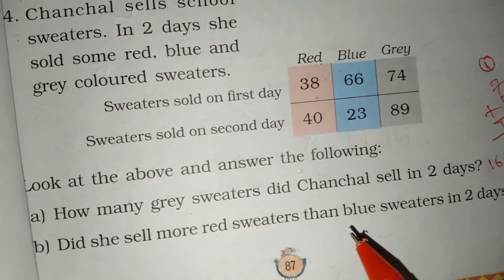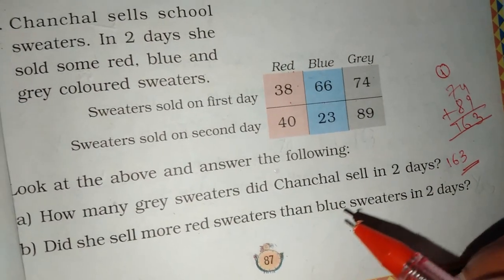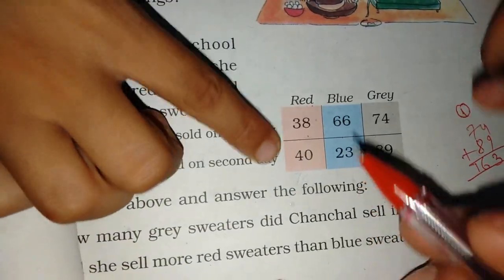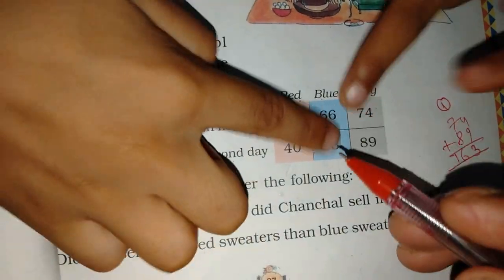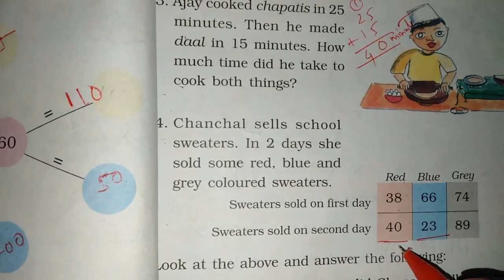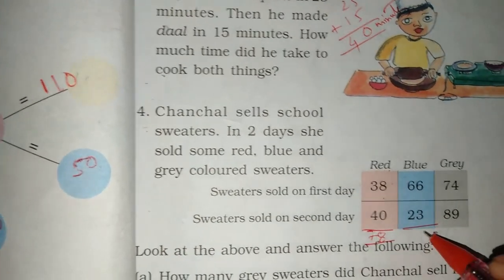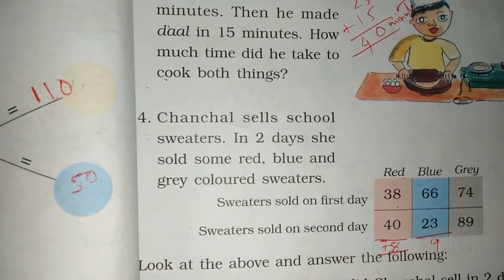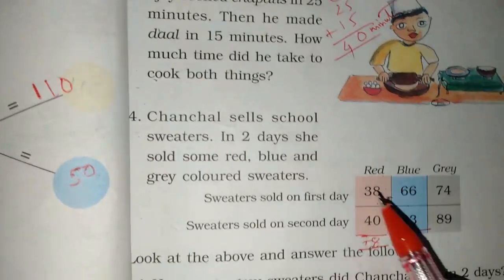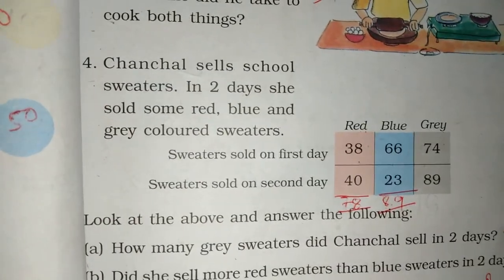Did she sell more red sweaters than blue sweaters in two days? How many more red sweaters did they sell? Let's add them here. 8 or 0? 6 or 3? 9, 9. 6 or 2? 8. Now they are saying that in two days, did they sell more blue or red? Blue is more — blue is more than 89. Which one? Blue.